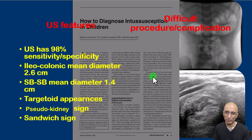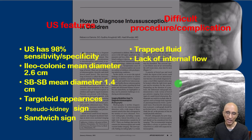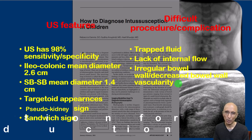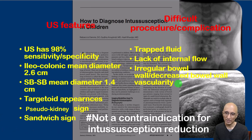Ultrasound can also help predict a difficult procedure or potential complications. Presence of trapped fluid, lack of internal vascularity within the intussusception, irregular bowel wall, or decreased bowel wall vascularity can potentially predict complications. It is important to remember that the presence of these features does not mean it is a contraindication for reduction.